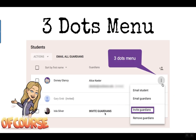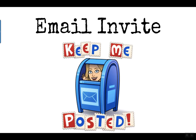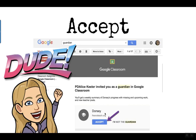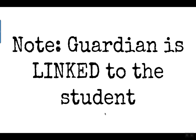If a student already has guardians, click on the three dots menu to choose to invite the guardians or to remove them. The guardian will receive an email invite and all they have to do is click accept, which will launch a classroom screen.